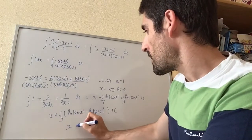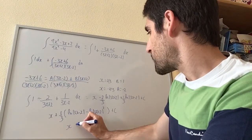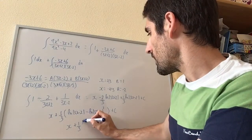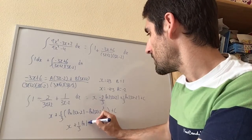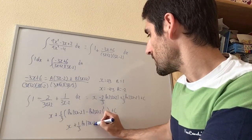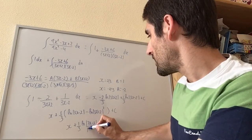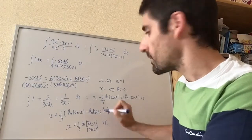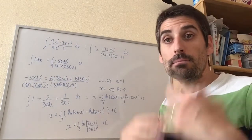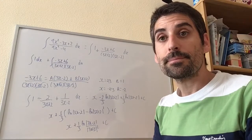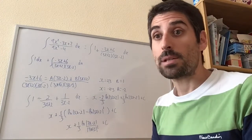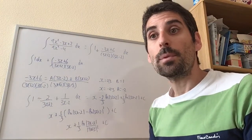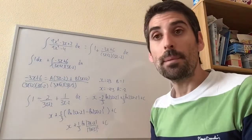So the final answer is x plus one-third log of (3x minus 2) over (3x plus 2) squared, plus C. And that's how to integrate using partial fractions — it's quite fun, actually. Hope you enjoyed it and found it helpful — let me know if there are any problems.